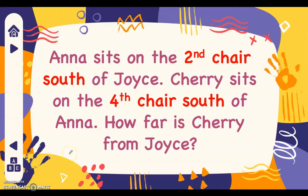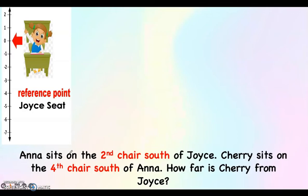Therefore, May is nine units west of her home. Let's have another one. Anna sits on the second chair south of Joyce. Cherry sits on the four chairs south of Anna. How far is Cherry from Joyce? When talking about south, it is below zero. Let us answer using the number line. Our keyword here is 'from Joyce,' so our reference point is Joyce's seat.